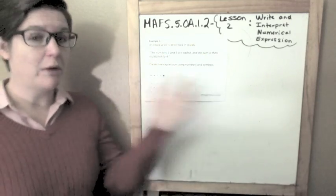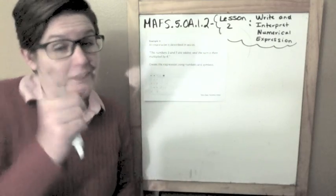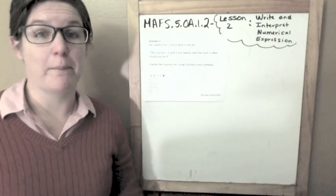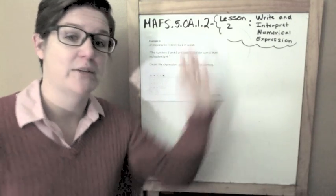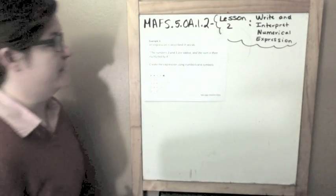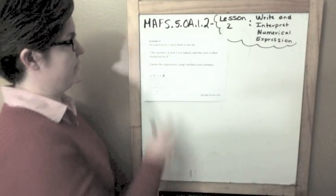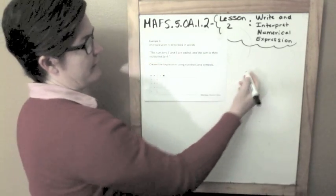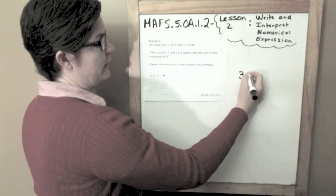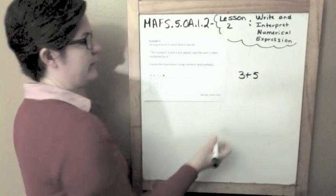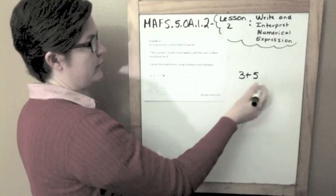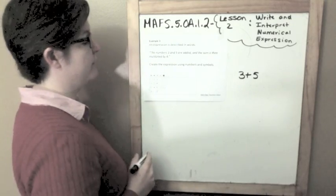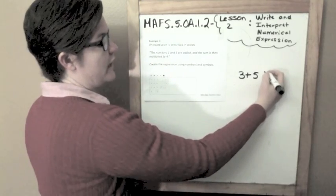You would definitely need to be showing your work on paper while you're taking your computer-based test. It says the numbers 3 and 5 are added, so 3 and 5 are added. And the sum is then multiplied by 4, so times 4.